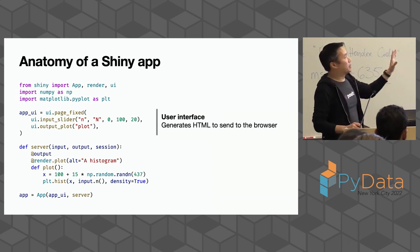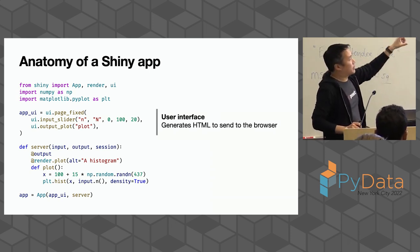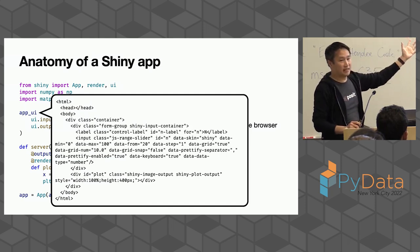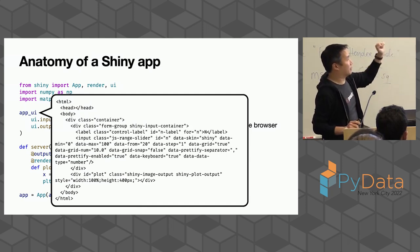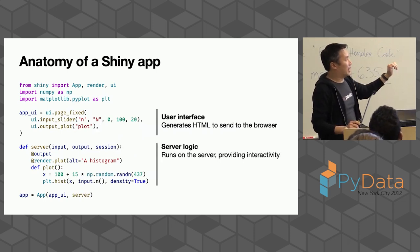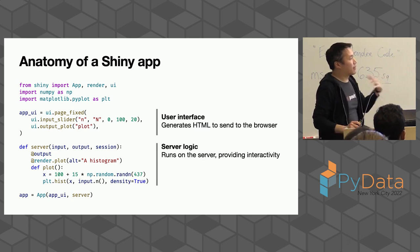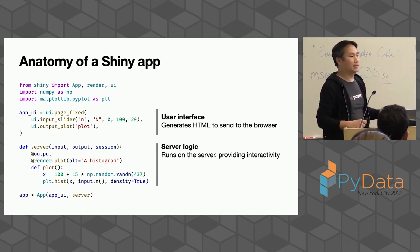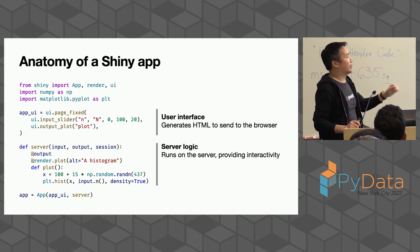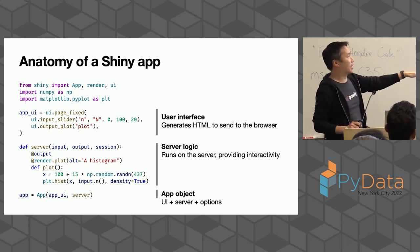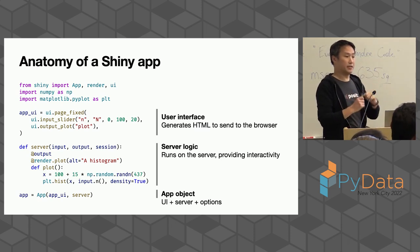Each Shiny app is composed of two main parts. First, you declare your user interface — Python code that generates HTML determining what your UI looks like. Second, you have a server portion, also Python code, which provides the interactivity: it says what's going to happen when you move inputs and need outputs to be updated. Finally, there's some boilerplate at the bottom to bring these two pieces together into a Shiny app object.